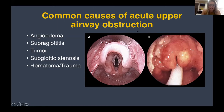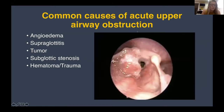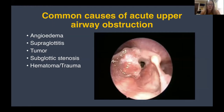Another thing we always have to consider is tumor. Tumor can cause more progressive airway obstruction. What can happen is the tumor grows slowly — the patient is fine — then they get a little junky, have been aspirating, and then have an acute decompensation. You come in and there's a tumor sitting there causing stridor.